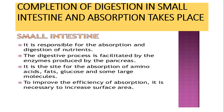In the small intestine, completion of digestion and absorption takes place. The small intestine is responsible for absorption and digestion of nutrients. The digestive process is done by enzymes - they help in the breakdown of complex materials into simpler ones. These enzymes are produced by the pancreas. The small intestine is a site for absorption of amino acids, fats, glucose, and some large molecules. To improve absorption efficiency, it is necessary to increase surface area.